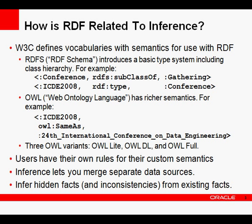There are a number of different vocabularies that the W3C defines. Additionally, users can define their own rules for whatever domain they happen to be operating in. One of the most interesting applications of this inference, certainly in the semantic web space, is the idea of being able to merge separate data sources.